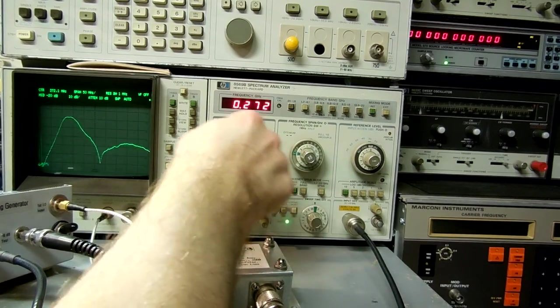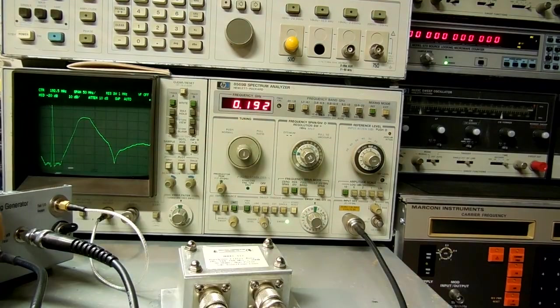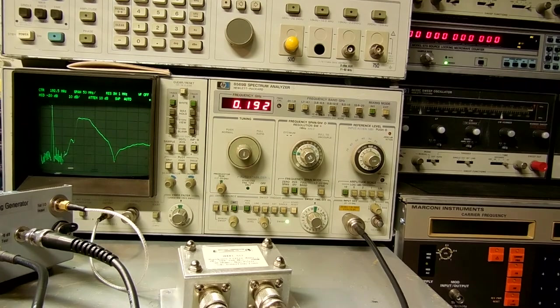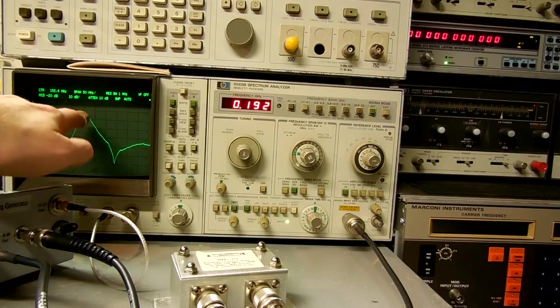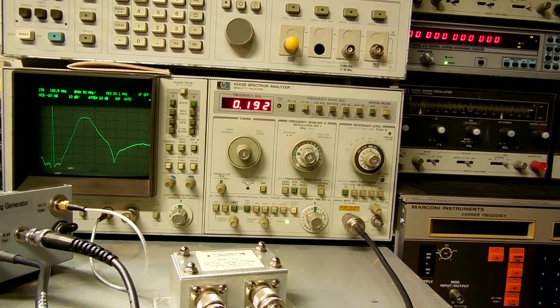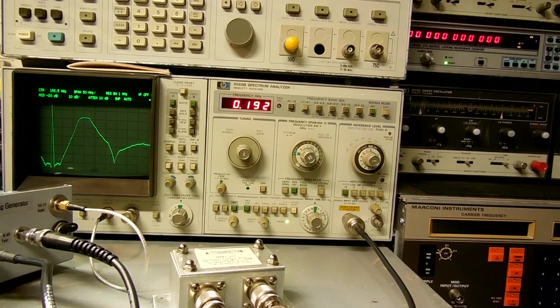The actual output power of the tracking generator is pretty much arbitrary because you're just measuring the dB range from your reference. So there's no reason to add unnecessary amplifiers or anything to it. You just kind of work from your reference.